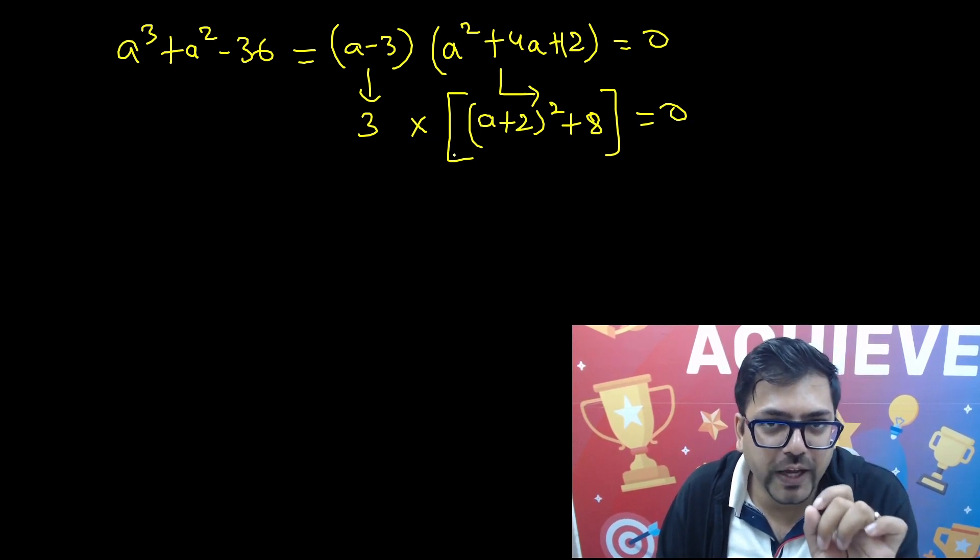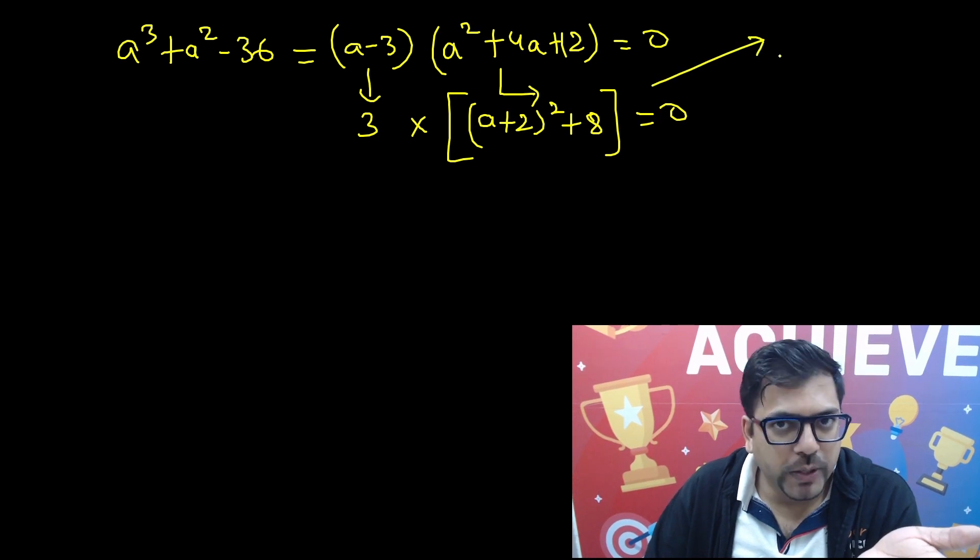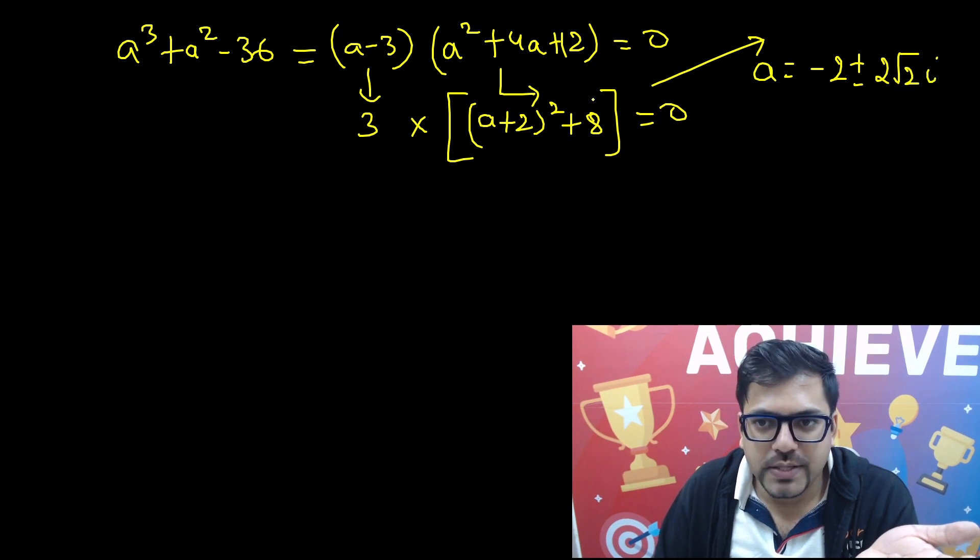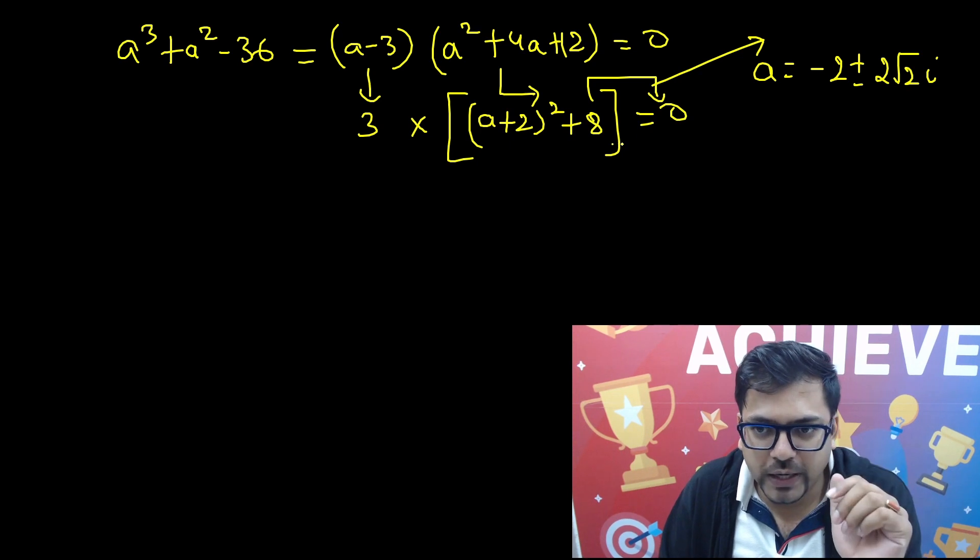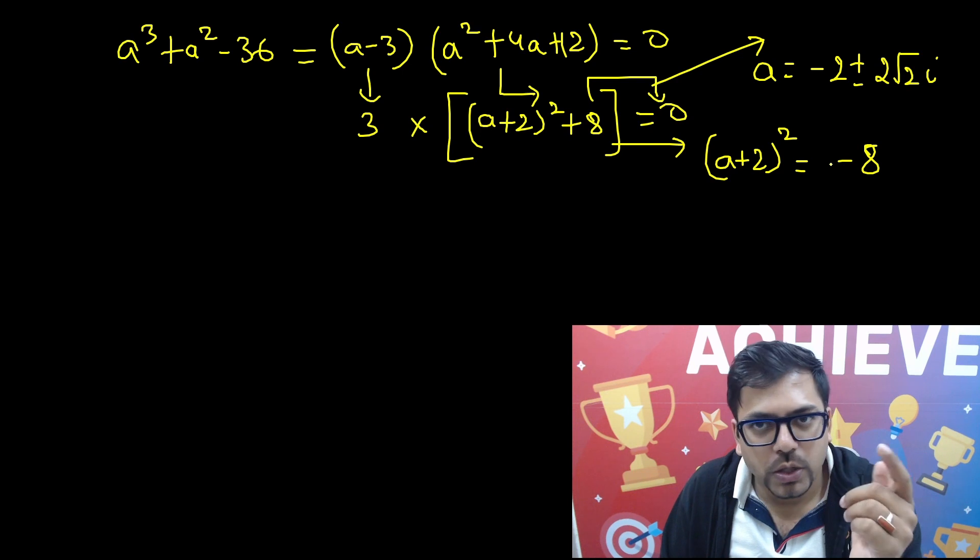So here obviously if you have to get the roots, it's going to be complex. It's going to be a = -2 ± 2√2i. You have to just send this 8 to this side and then do the under root. In case if you are getting some difficulty, I'll just show you: (a + 2)² = -8.